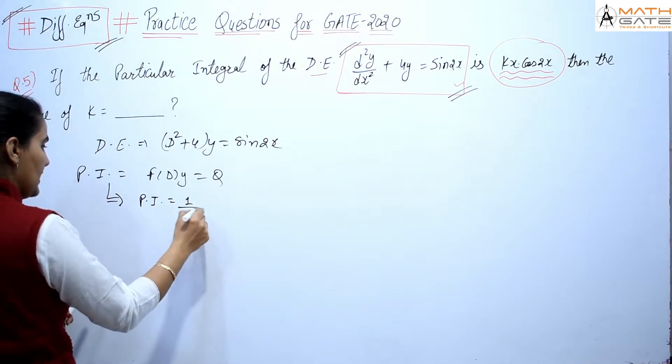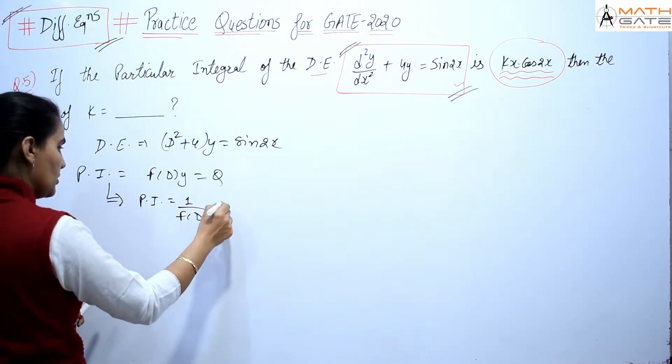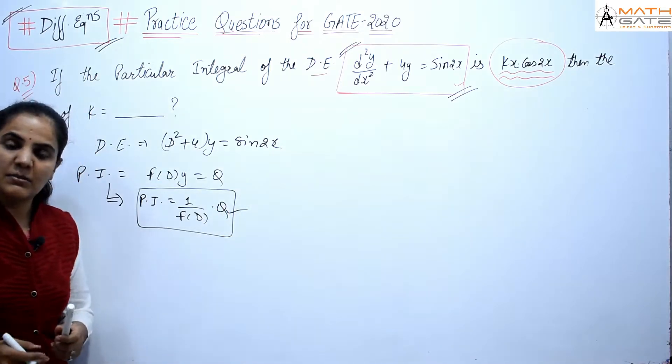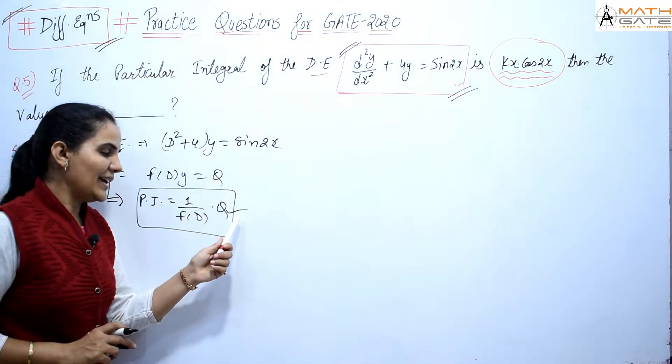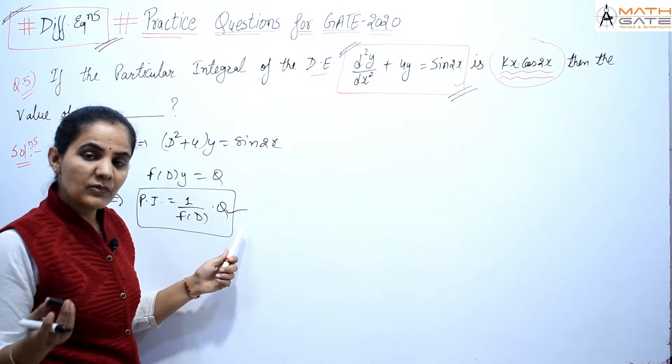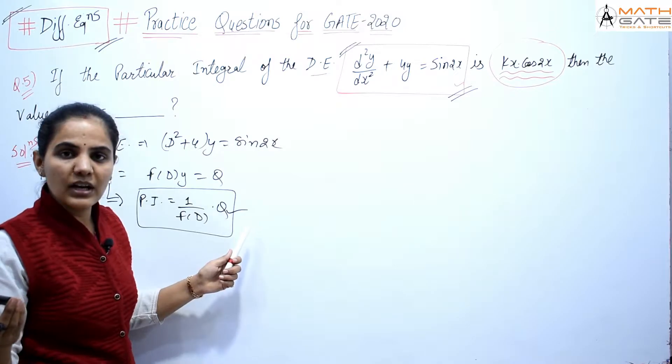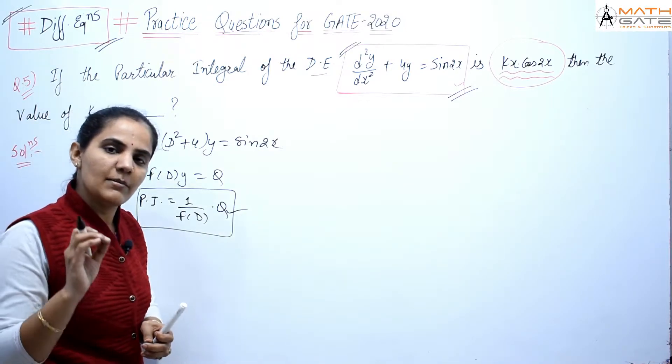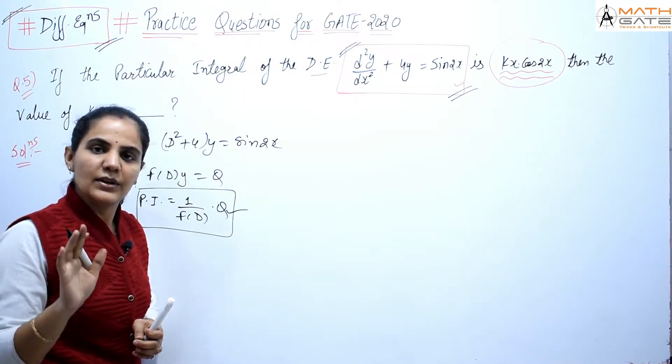In this part, we're looking to find 1/(f(D)) times Q. This depends on Q in nature. In this particular case, when Q is sin or cos, or e^x, which cases we have discussed in our differential equation playlist, you can see those videos.